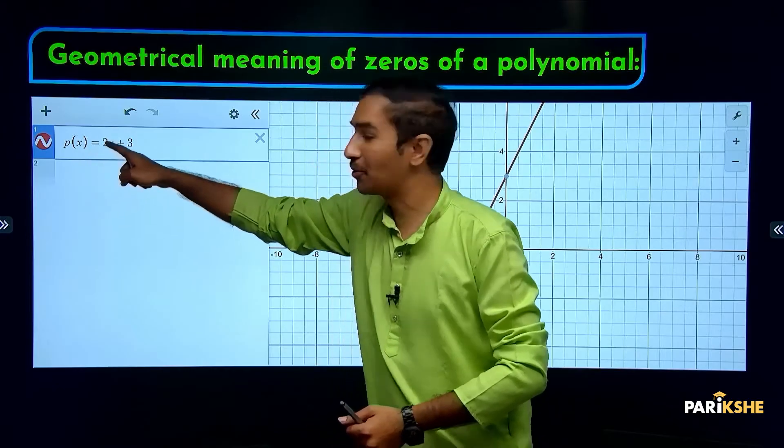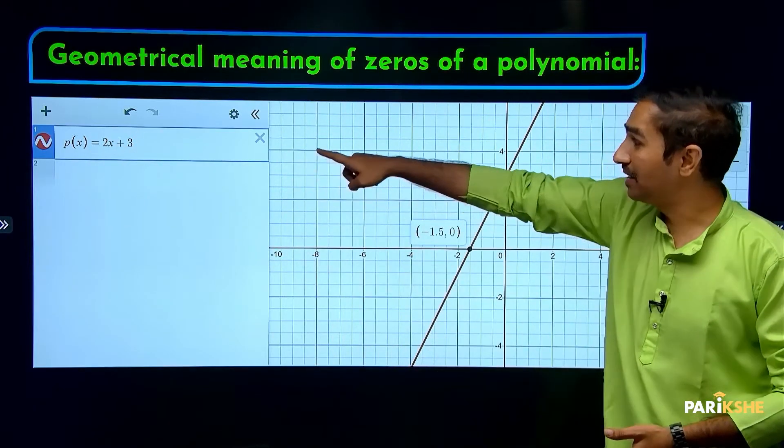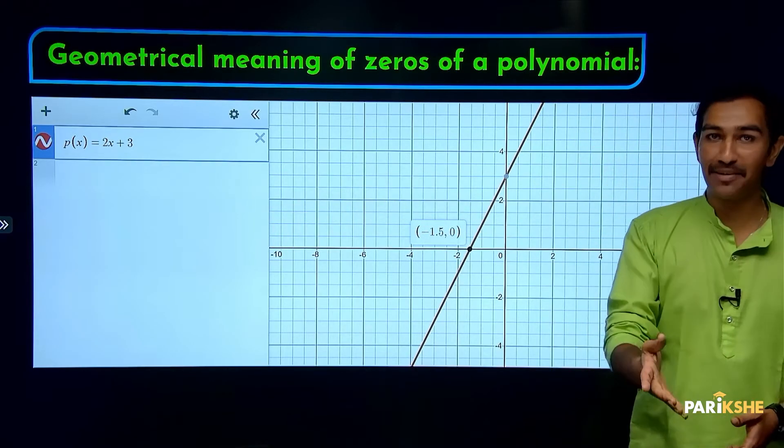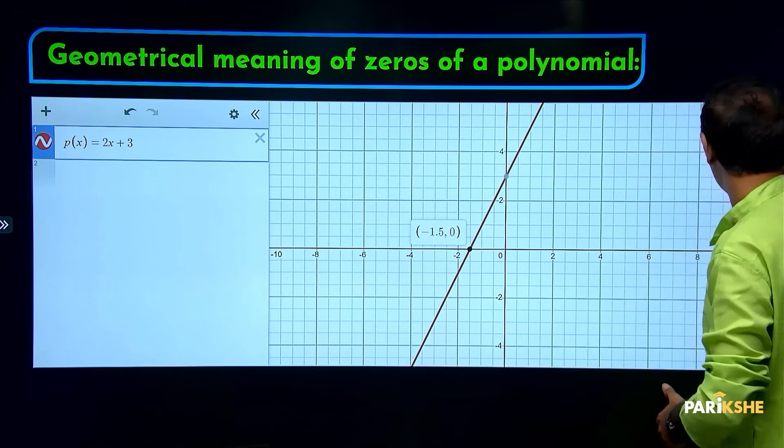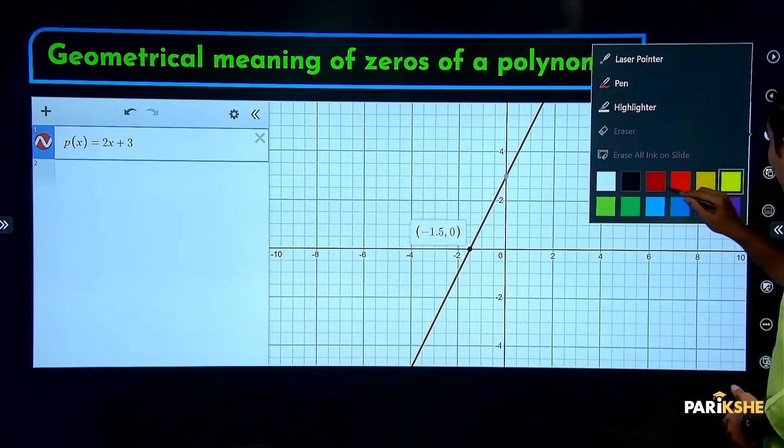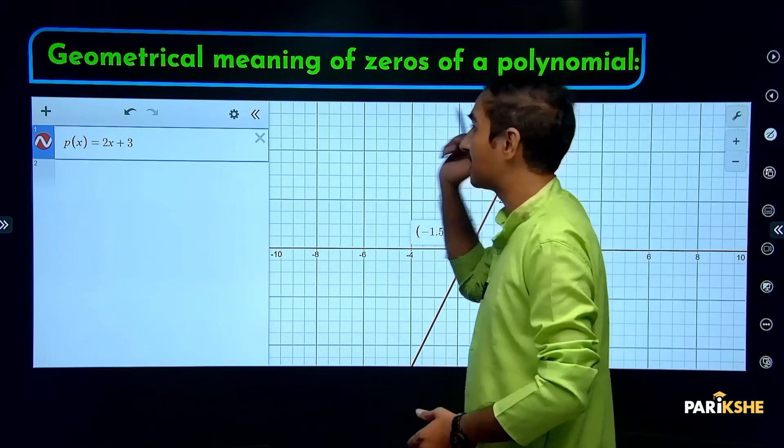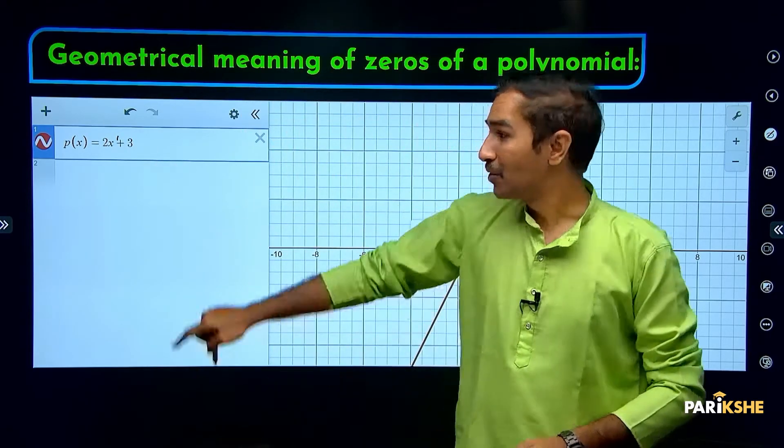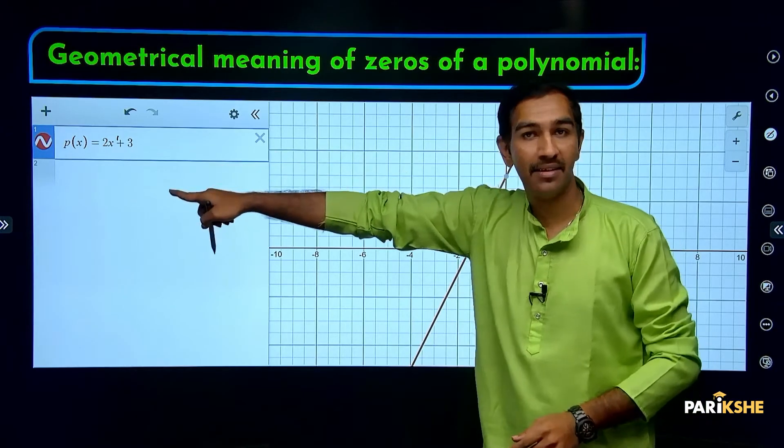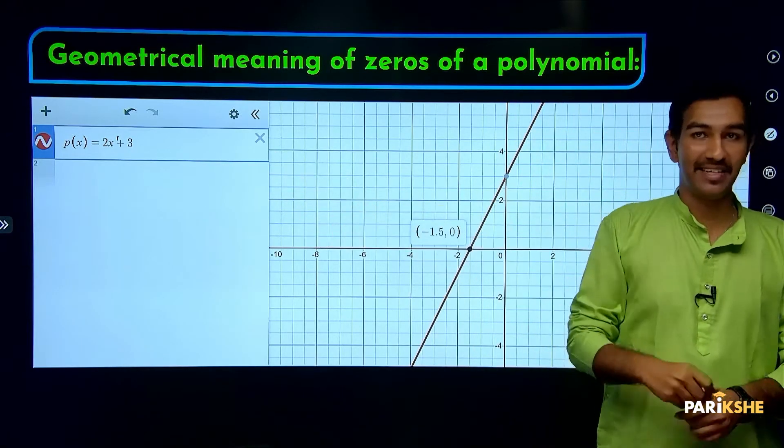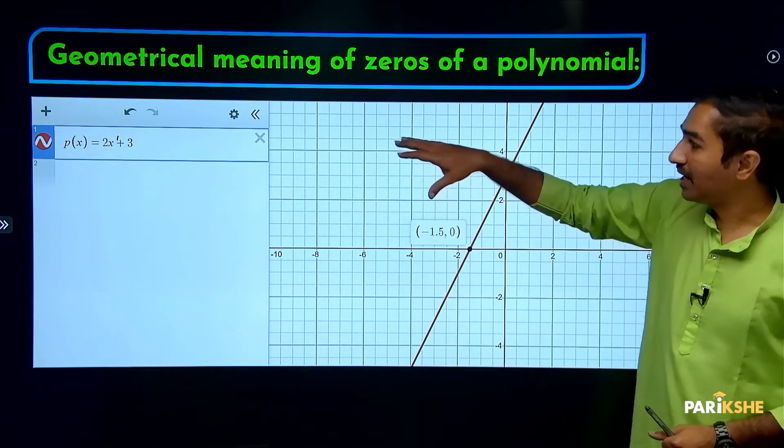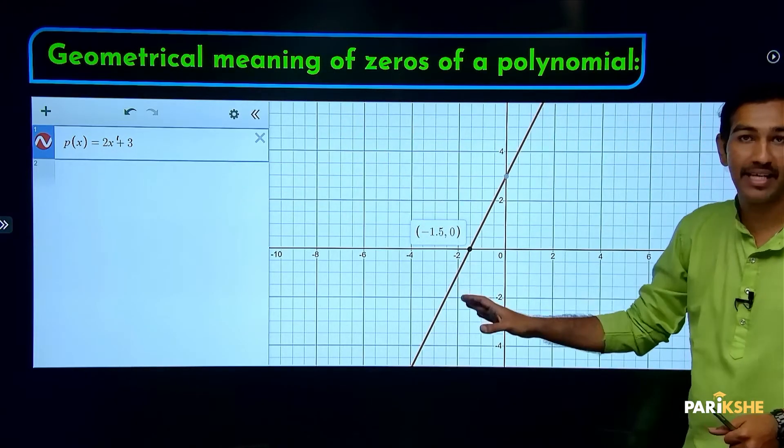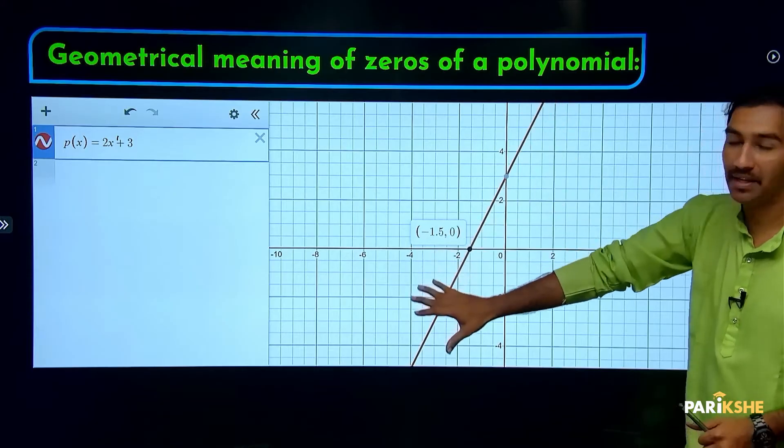Take the polynomial p(x) = 2x + 3. Based on the degree, what is this called? Linear polynomial. Why is this linear polynomial? Because the highest power is 1: 2x to the power of 1 plus 3. So the highest power 1 means linear polynomial. Now let's plot the graph.